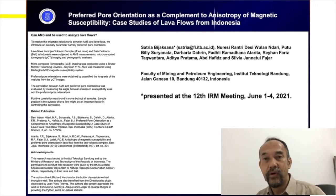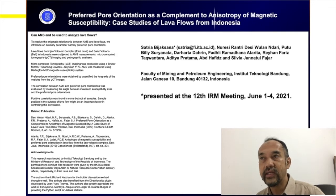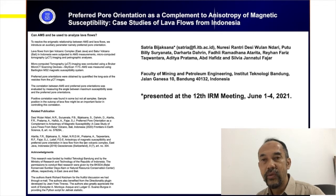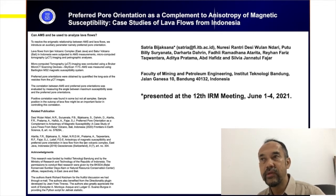The preferred pore orientations were obtained by quantifying the long axis of the vesicles from the micro CT images. The correlation between AMS and preferred pore orientation was then evaluated by measuring the angle between the maximum susceptibility axis and the preferred pore orientations.